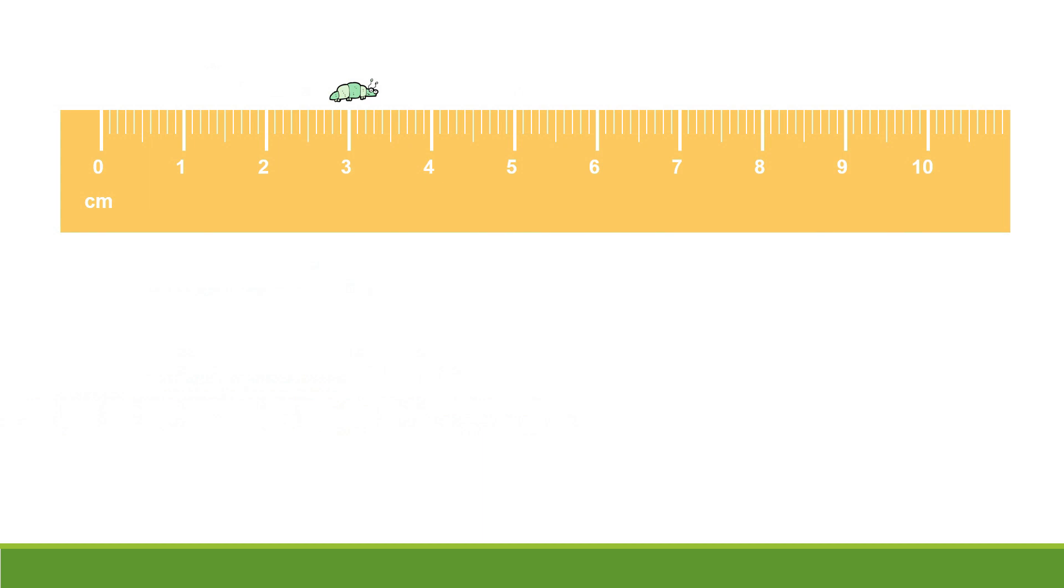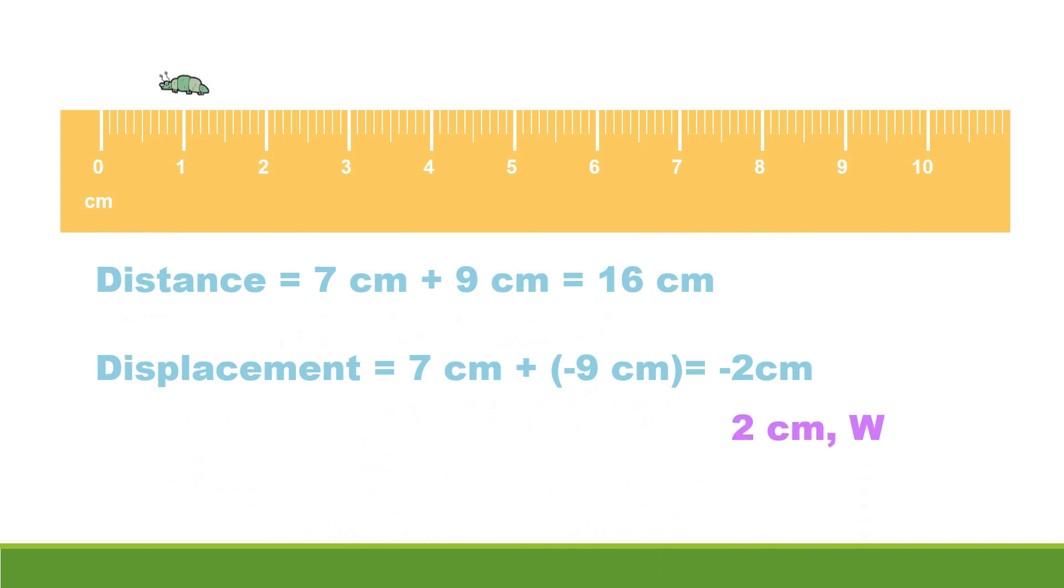Determine the bug's distance and displacement. For the distance, it's 16 centimeters. Just add every length you travel. But for displacement, we have only negative 2 centimeters or 2 centimeters west. Since we combine the vectors positive 7 centimeters and negative 9 centimeters, or 7 centimeters east and 9 centimeters west.